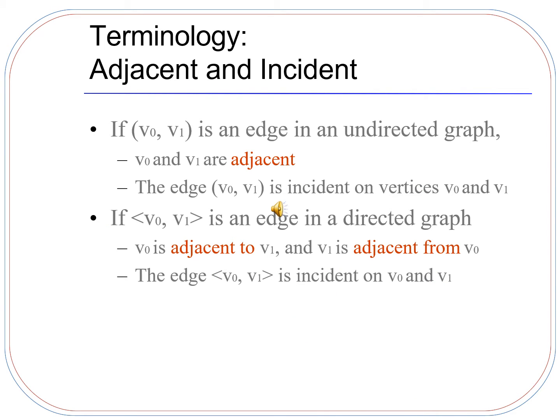Terminology: adjacent and incident. If there is an edge from V0 to V1 in an undirected graph, then V0 and V1 are adjacent to each other and this edge is incident on both vertices V0 and V1. If there is an edge from V0 to V1 in a directed graph, then V0 is adjacent to V1 and V1 is adjacent from V0, and this edge is incident on both V0 and V1.